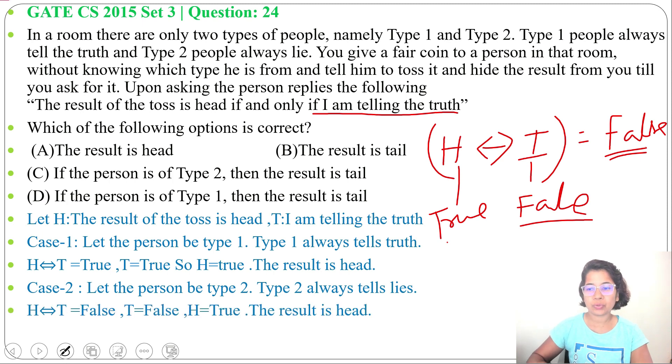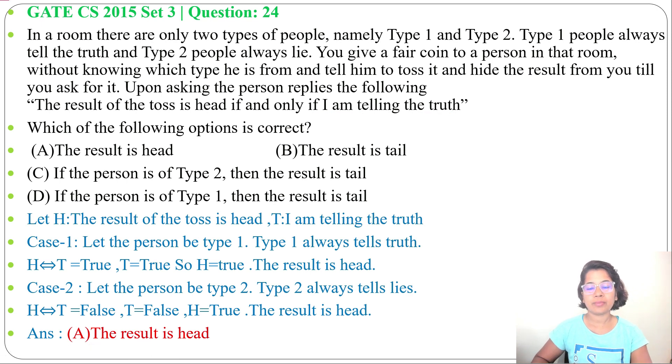So in Case 2, when that person is telling lie, it should be head. So answer will be option A, the result is head in both cases, if that person is telling true or if the person is telling lie. So answer is option A, the result is head.